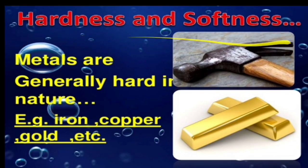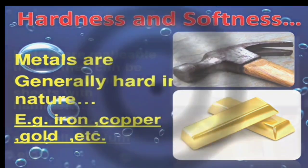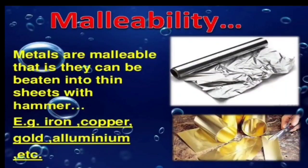Hardness and softness: all metals are generally in the form of solids, so they are generally hard in nature. Some of them are soft — soft metals are lithium, sodium, and potassium. The remaining metals are hard.